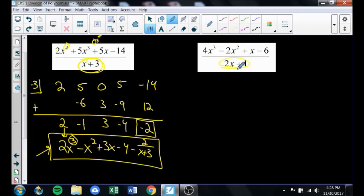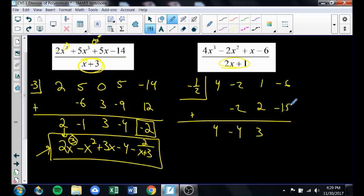I'll do it one more time. The thing that makes this 0 is negative 1 half. So that goes in that box. Here I'll put 4, negative 2, 1, negative 6. Drop down. Multiply. Negative 1 half times 4 is negative 2. Then I add in this column. Negative 2 plus negative 2 is negative 4. Multiply. Negative 1 half times negative 4 is positive 2. Add. 1 plus 2 is 3. Multiply. Negative 1 half times 3 is negative 1.5. Add. Negative 6 minus 1.5 is negative 7.5. That goes in a box. I get 4x squared minus 4x plus 3 with a remainder of negative 7.5 over 2x plus 1.